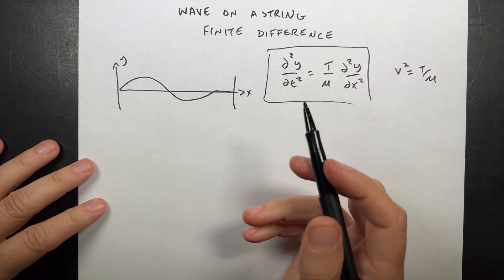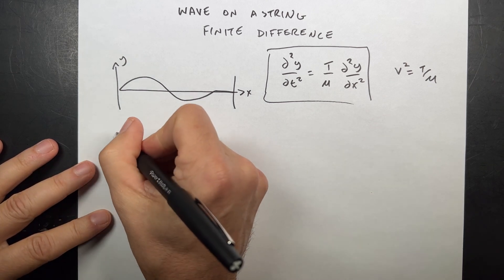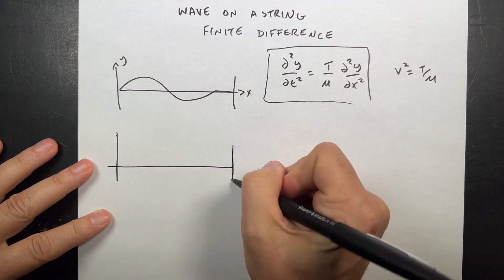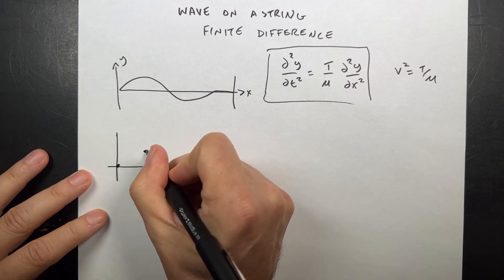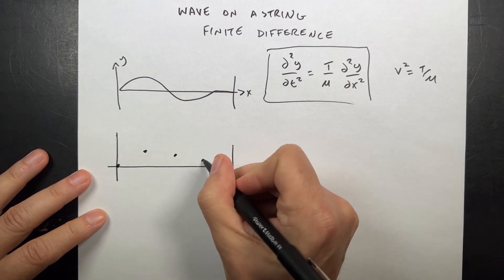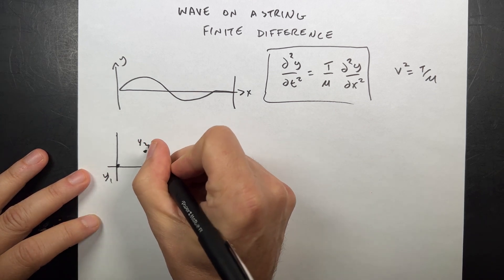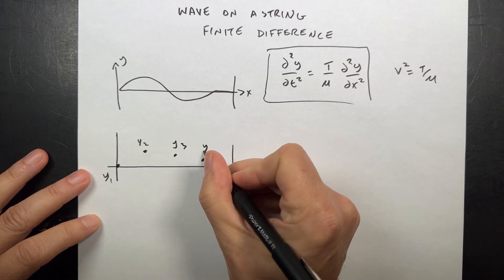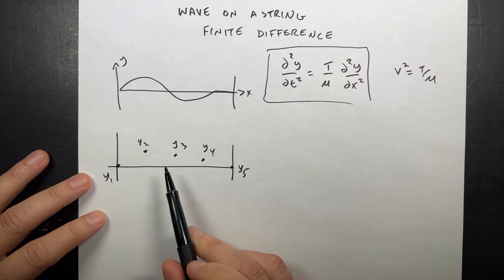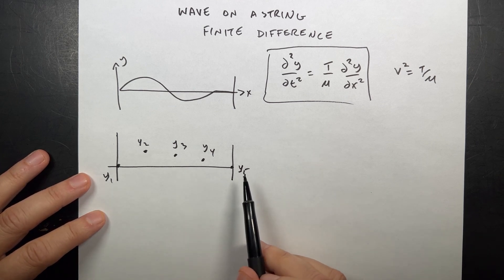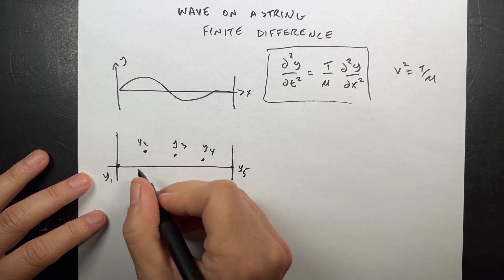We want to model this, and it's a complicated equation. What we can do is use the finite difference method. Suppose I have this string and I represent it with some finite points. So there I have y1, y2, y3, y4, y5. With these points, I can represent a second derivative as a finite difference.